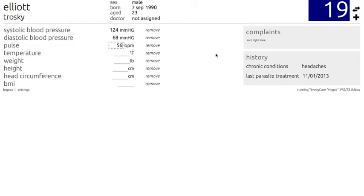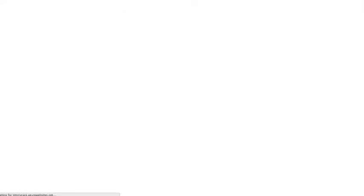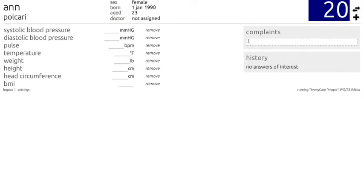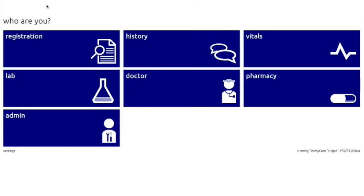Once you have finished filling out all the necessary information for the vitals section, you can put in the next patient's number. You can also log out to go to a new section by clicking Log Out in the bottom left, and you'll be taken back to the TimiCare homepage.